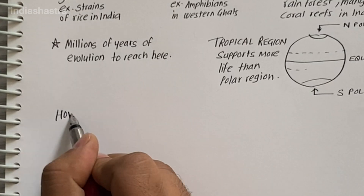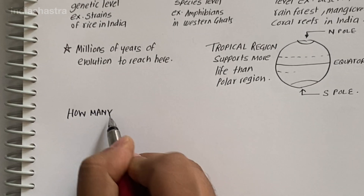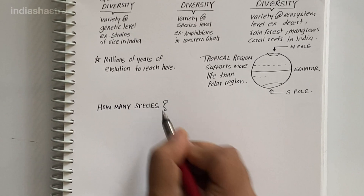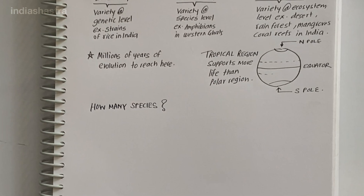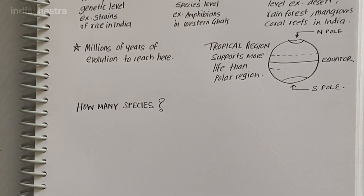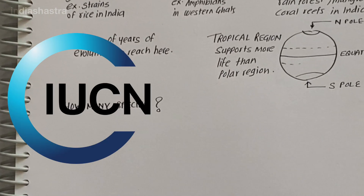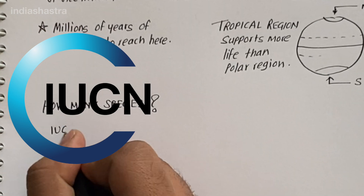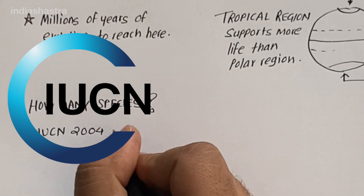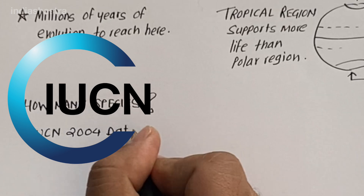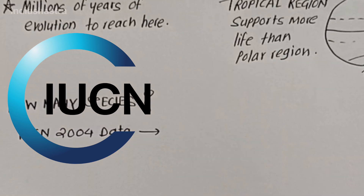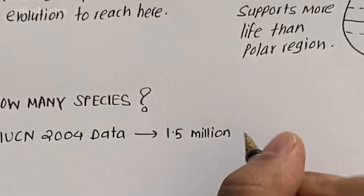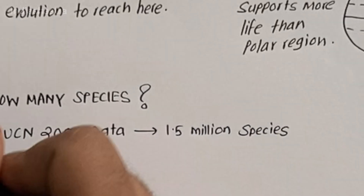How many species are there on Earth, and how many in India? It is not easy to answer this question. According to the International Union for Conservation of Nature and Natural Resources, IUCN, in 2004, the total number of plant and animal species described so far is slightly more than 1.5 million.